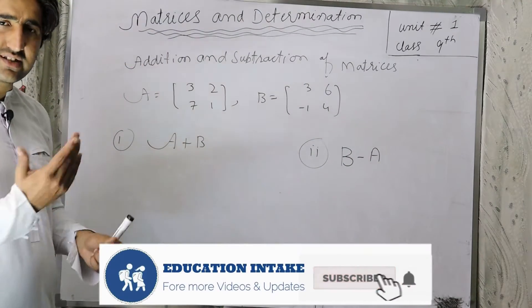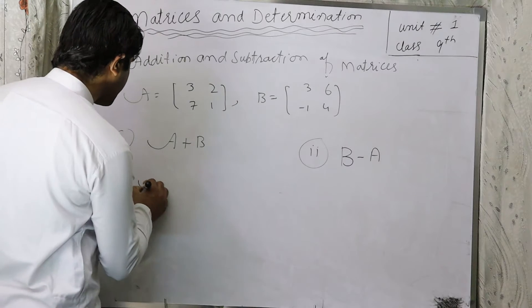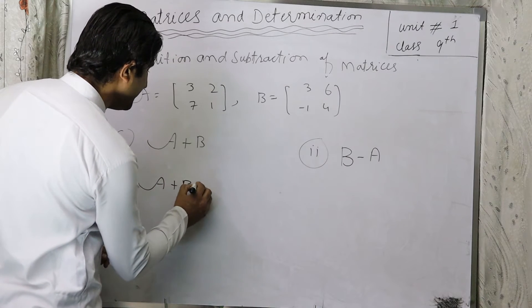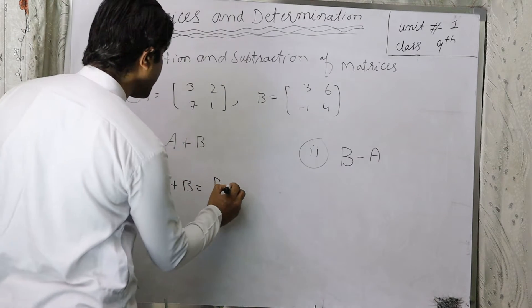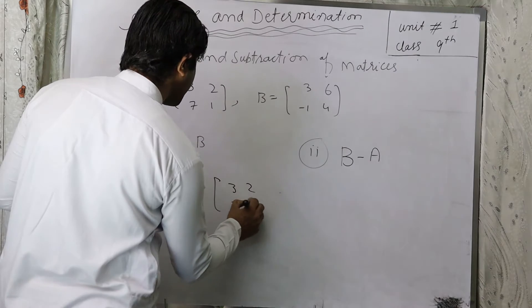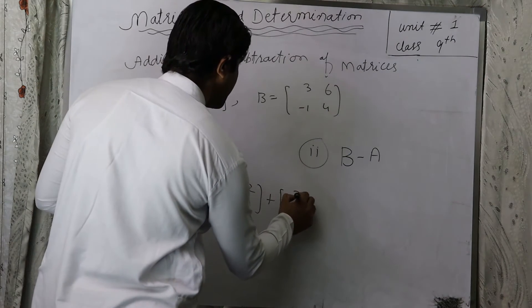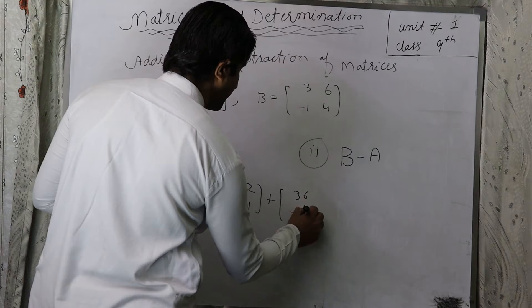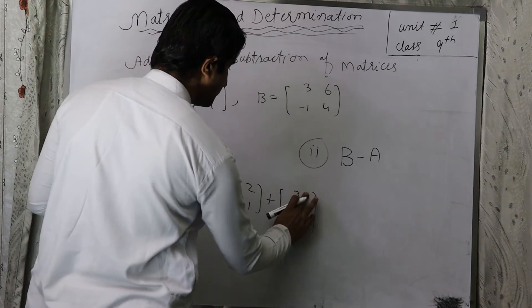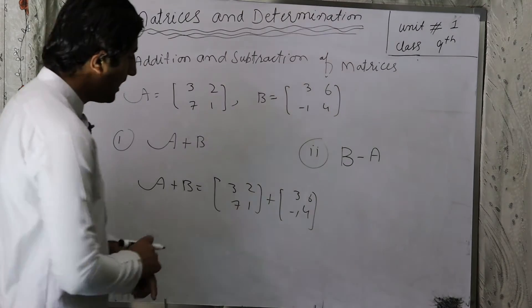So here, subtraction and addition will be. Now, what do we do? A plus B is equal to - now A matrices write: 3, 2, 7, 1 plus B. Guys, we have 3, 6, minus 1 and 4. Now we will do this.